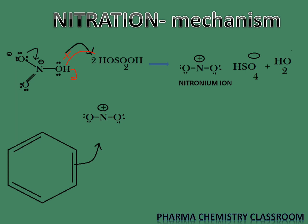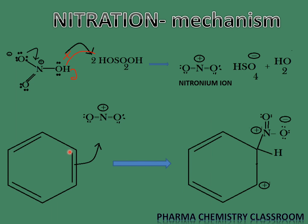In the next step, benzene reacts with the formed nitronium ion. One of the pi bonds is utilized — the nitronium ion attaches to one of the pi bond carbons, which becomes sp3 hybridized. Each carbon in the benzene ring has one proton attached to it. In this step we get our carbocation, known as the arenium ion or cyclohexadienyl carbocation.